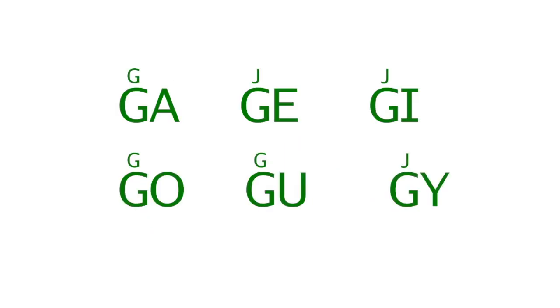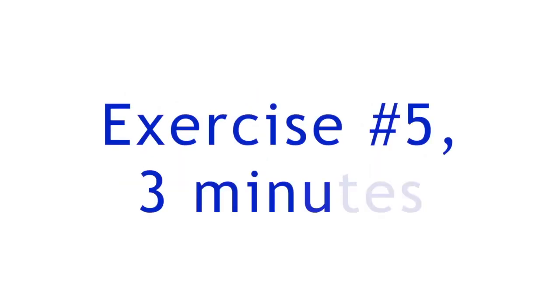G syllables are similar to C syllables. G says J before I, E, and Y, and K before the rest. Number five — see you back in three minutes.